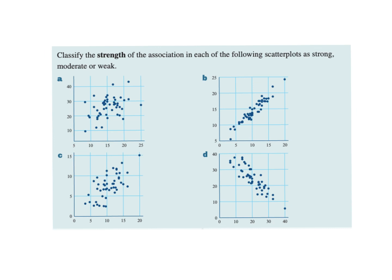Now classify these as either strong, moderate, or weak. The first one I'd say is weak — there's a lot of spreading out. The next one, B — strong. The third one — moderate. And the last one — strong.